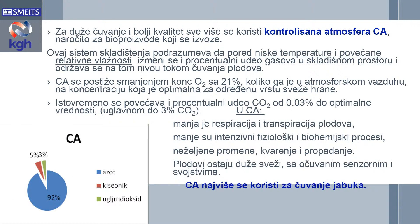For longer and better quality storage, controlled atmosphere is used, especially for high-value produce. The system implies that, according to temperature and relative humidity, the percentage of gases in the atmosphere is modified. Controlled atmosphere is controlled by reducing the 21% oxygen in the atmosphere down to a concentration that is optimal for certain types of food.